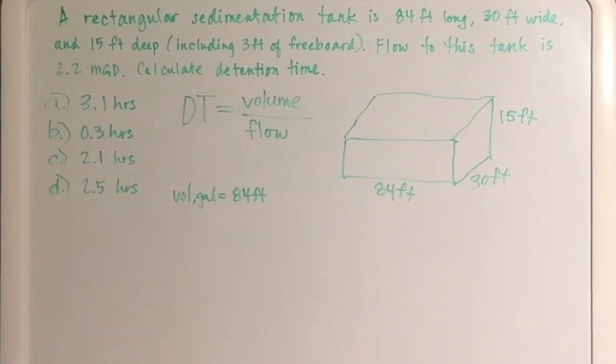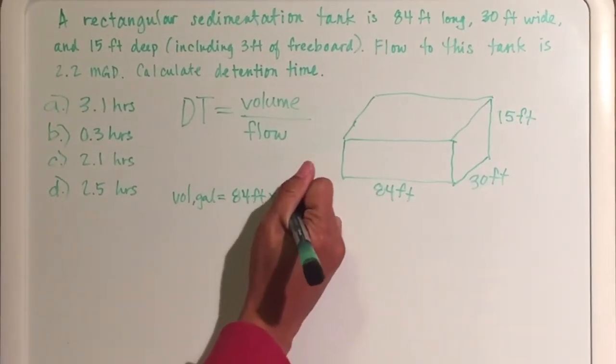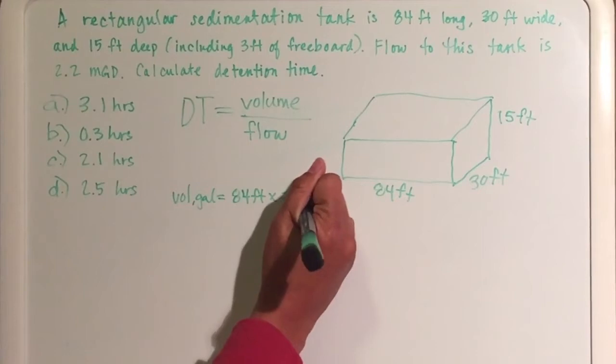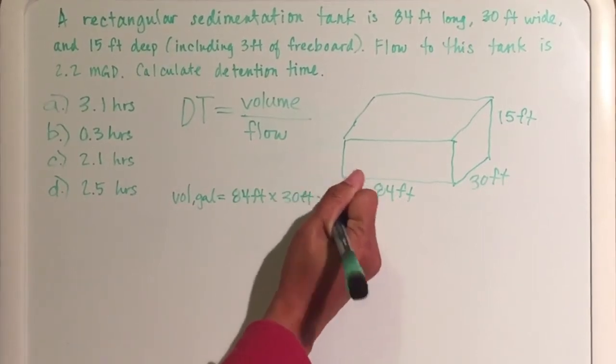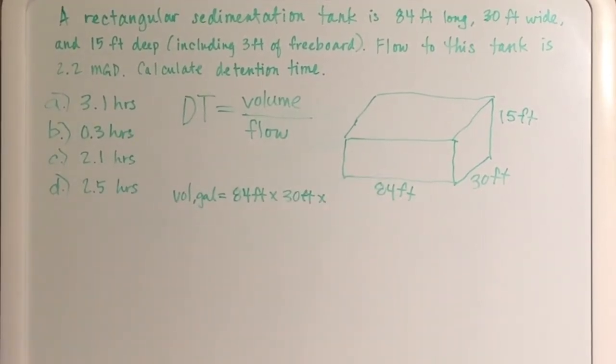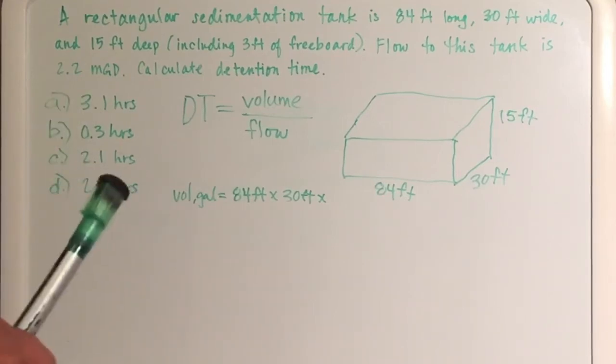I'm a big stickler for units of measure. So 84 feet times 30 feet times - now it should be 15 feet if we didn't have freeboard, so we're going to minus that three feet from 15 - you're going to have 12 feet of operating water depth.